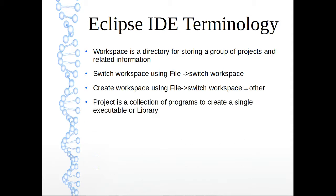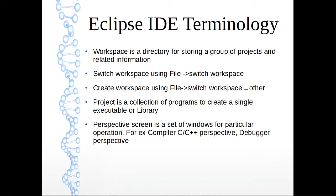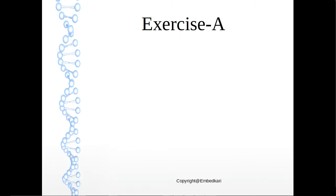A project is a collection of programs — different source files collected together, linked together, and their object files linked to create a single executable or library. A perspective is a set of windows for a particular operation. For example, the C/C++ perspective shows compiler-related windows, and the debugger perspective shows variable, breakpoint, register, and memory view windows.